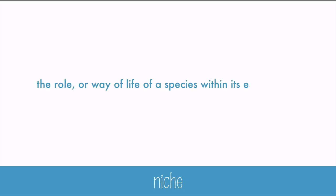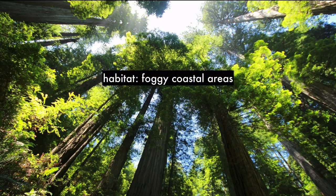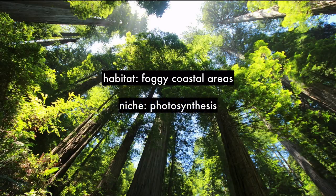You may sometimes hear people use the word habitat and the word niche interchangeably, but that's not quite how they should be used. A niche is the job or role of the organism within its environment. So habitat is a home and niche is a job. For example, a redwood tree takes energy from the sun and turns it into sugar using photosynthesis. Redwood trees are often found in foggy coastal areas like Santa Cruz, California. The habitat is the foggy coastal areas like California, and the niche is converting the sun's energy into sugar by photosynthesis.